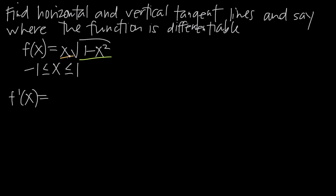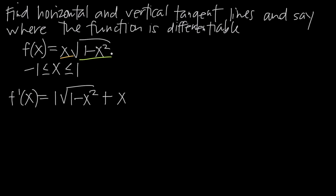Product rule tells us to take the derivative of the first function — the derivative of x is 1 — and multiply that by the second function as-is: the square root of 1 minus x squared. Then we add to that the first function left alone, which is x, multiplied by the derivative of the square root of 1 minus x squared.